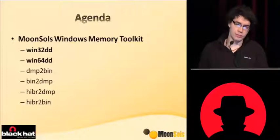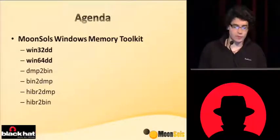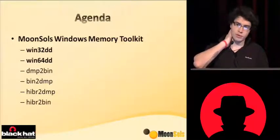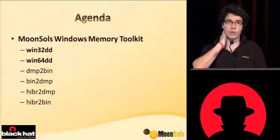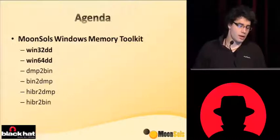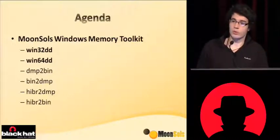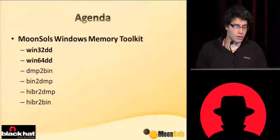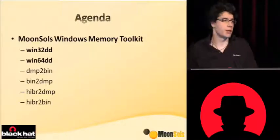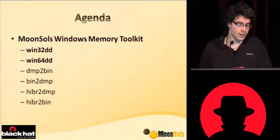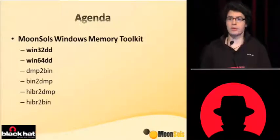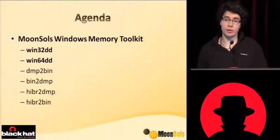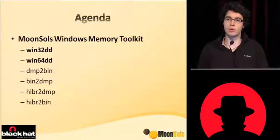The toolkit I am presenting is called the Windows Memory Toolkit. It contains various utilities including WinDD, and dump-to-bin to convert a Microsoft crash dump into a linear raw memory dump. You can also convert a raw dump into a Microsoft crash dump. There are also two tools for the Microsoft hibernation file: the first converts a hibernation file directly into a Microsoft crash dump, and the second one uncompresses the hibernation file.